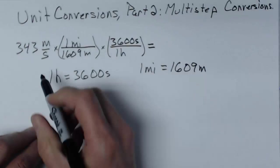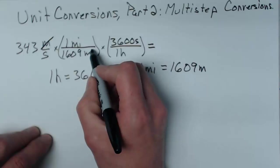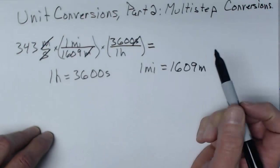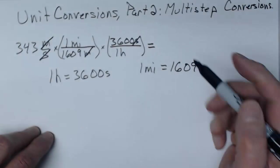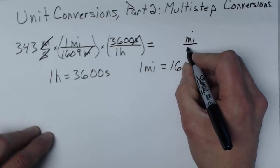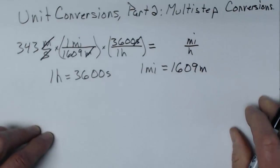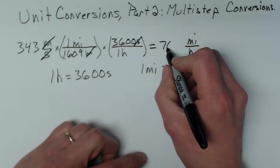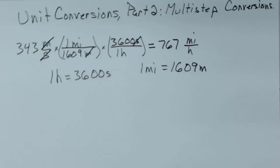Now all I have to do is multiply this out. First I'll check the units though. I can see the meters divide out here. The seconds will divide out. And the units that are left, miles per hour, I'll have miles on top and hours on the bottom. When I perform the calculation, I get about 767 miles per hour for that unit conversion.